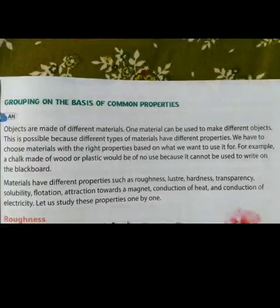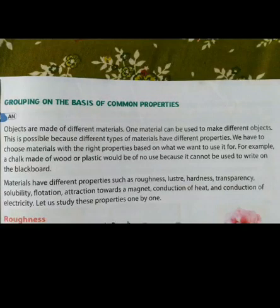Objects are made of different materials and one material can be used to make different objects. This is possible because different types of materials have different properties like roughness, luster, hardness, transparency, solubility, flotation, attraction towards magnet, conduction of heat, and conduction of electricity. We are studying these properties one by one.